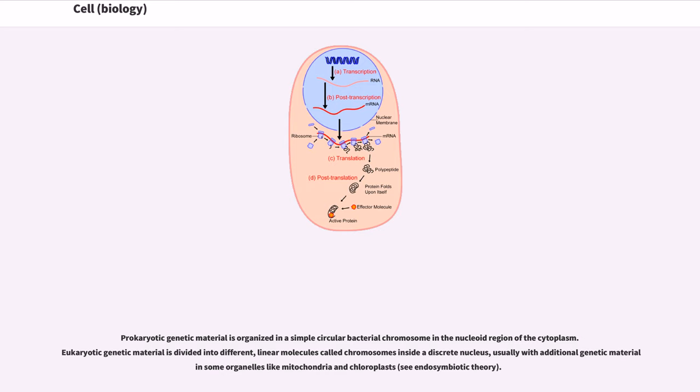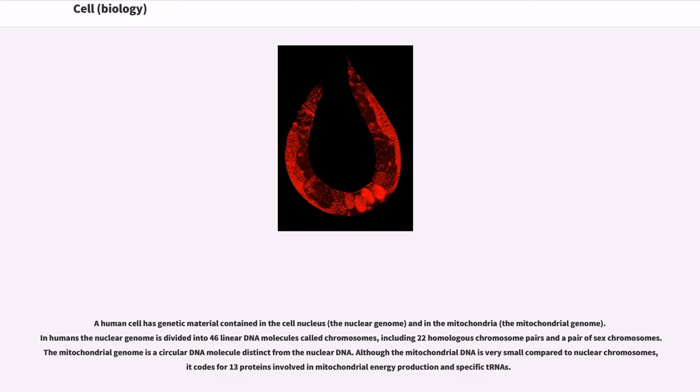Prokaryotic genetic material is organized in a simple circular bacterial chromosome in the nucleoid region of the cytoplasm. Eukaryotic genetic material is divided into different linear molecules called chromosomes inside a discrete nucleus, usually with additional genetic material in some organelles like mitochondria and chloroplasts.